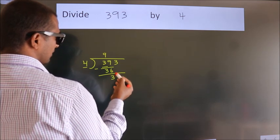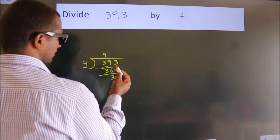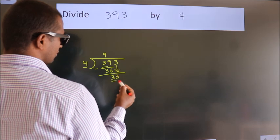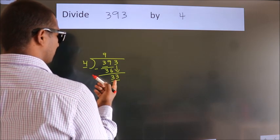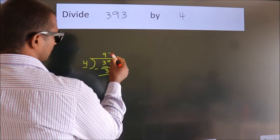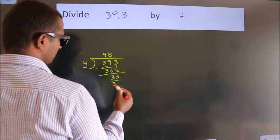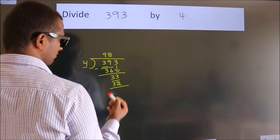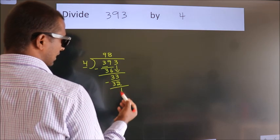After this, bring down the beside number. So, 3 down. So, 33. A number close to 33 in 4 table is 4 8s 32. Now, we subtract. We get 1.